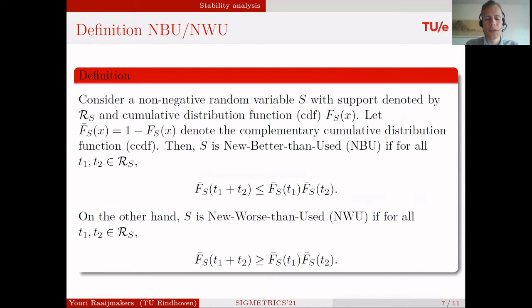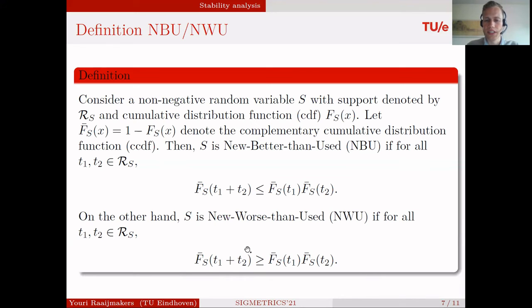Before looking at the theorem, I will give the definition of new-better-than-used (NBU) and new-worse-than-used (NWU). This definition is in terms of the complementary cumulative distribution function (CCDF), defined as 1 minus the CDF. For NBU we have the inequality with a less-than-or-equal sign; for NWU the sign is reversed. Intuitively, NBU distributions have low variability while NWU distributions have high variability.